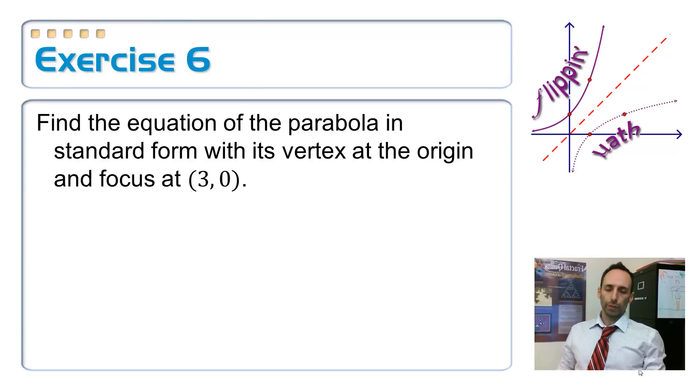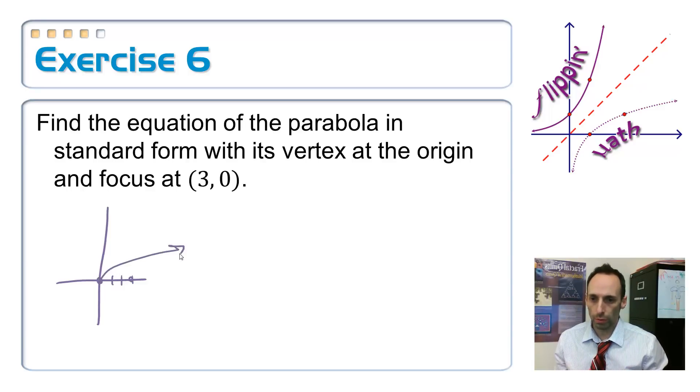Find the equation of the parabola in standard form with its vertex at the origin and focus at (3, 0). Again, a sketch would be tremendously helpful. So, origin, there we go, 0, 0, and my focus is at 3, 0, that's over here, so 1, 2, 3. There's my focus, and I know that my parabola has to wrap around the focus. Like so, right, this way, and this way.